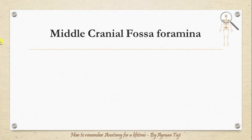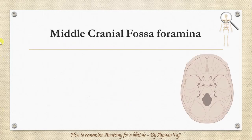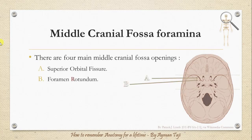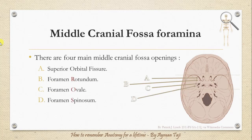Now, the middle cranial fossa and its foramina. The middle cranial fossa has four main openings: the superior orbital fissure, foramen rotundum, foramen ovale, and foramen spinosum. To remember them, you can recall that the middle cranial fossa has the superior orbital fissure and 'ROWS' for rotundum, ovale, and spinosum.